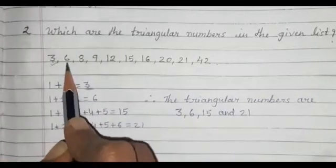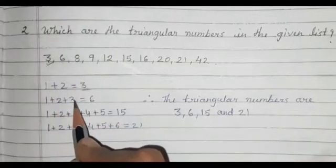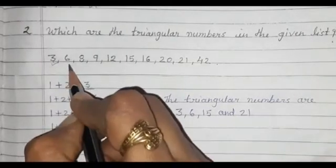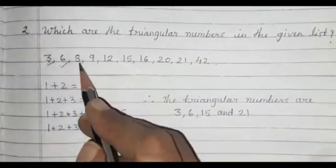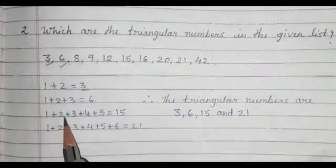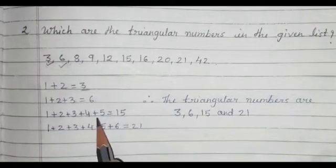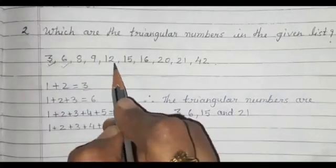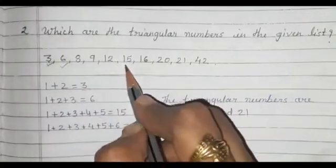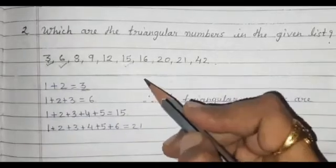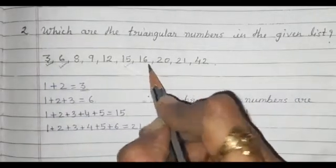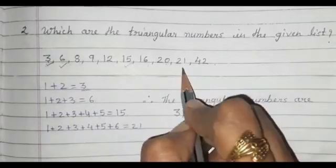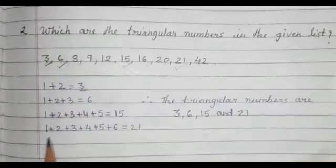6 is also a triangular number because 1+2+3=6. Now, 1+2+3+4+5=15. So 8, 9, and 12 are not triangular numbers. 15 is a triangular number. 16 is not a triangular number. 20 is not a triangular number. And 21 is a triangular number.